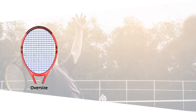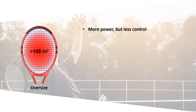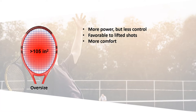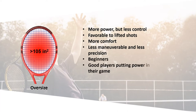The oversized sweet spot surface is usually more than 105 square inches. Rackets with an oversized sweet spot increase power while decreasing ball control. They make it easier to lift shots and absorb shocks and vibrations, making the game more comfortable for the player. Their size makes them less maneuverable and removes precision from the player's game. They are recommended for beginners or good players who put a lot of power in their game.